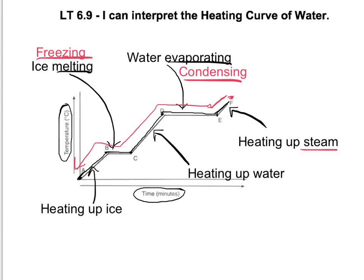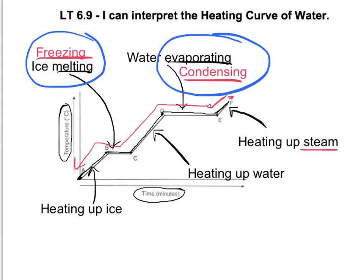So you can see all four phase changes that we've talked about: freezing, melting, condensing, and evaporating — they're all there. They all correspond to the flat areas on the graph, while the temperature increases correspond to the sloped areas. So there are five distinct areas on the heating curve, and it's good to be able to explain what's happening at each of those.